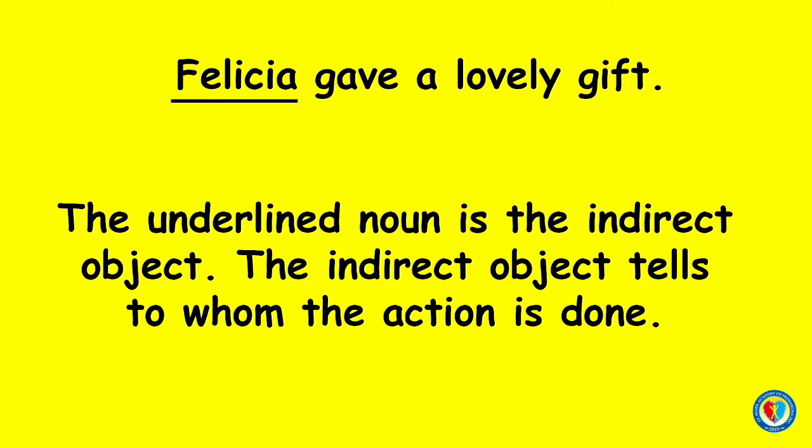Number 4. Felicia gave a lovely gift. For the fourth example, the underlined noun is the indirect object. The indirect object tells to whom the action is done.